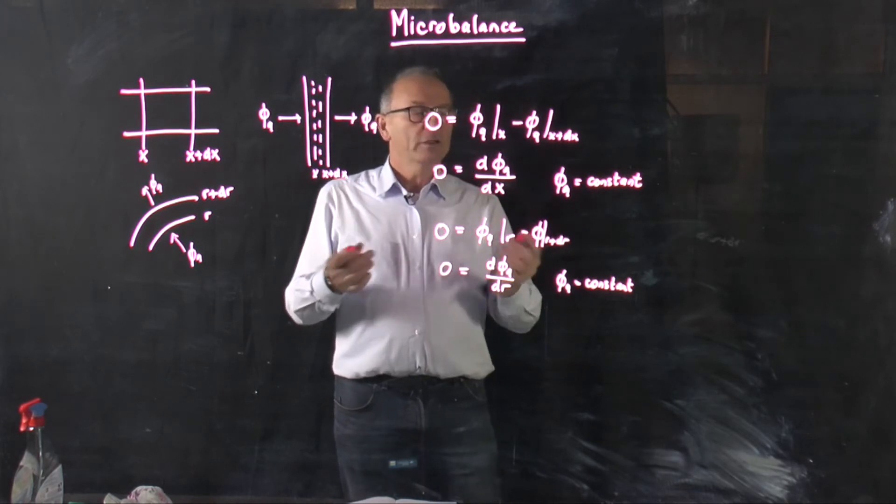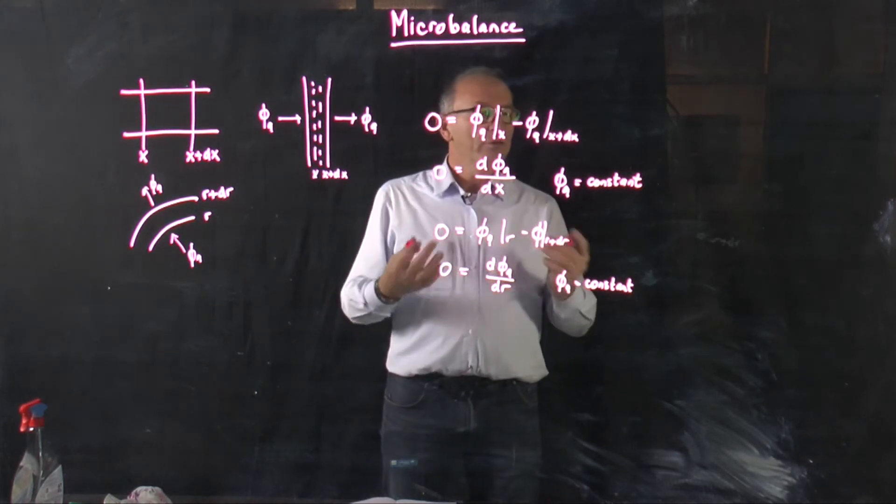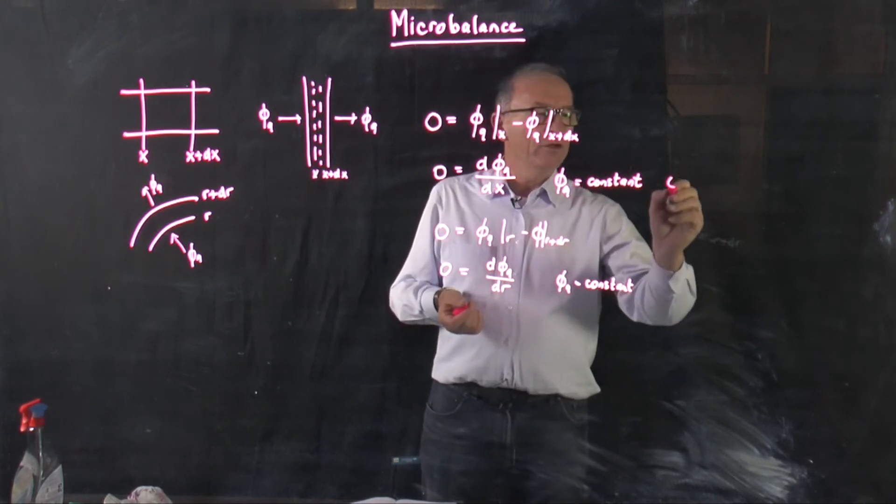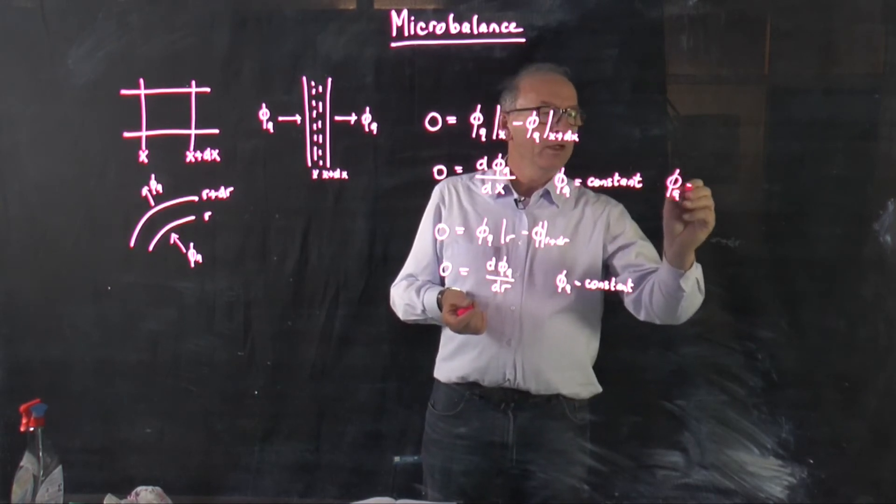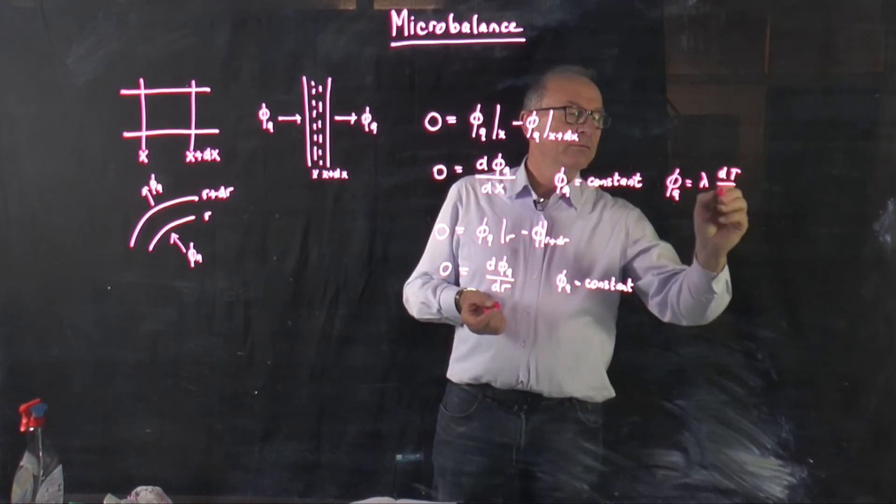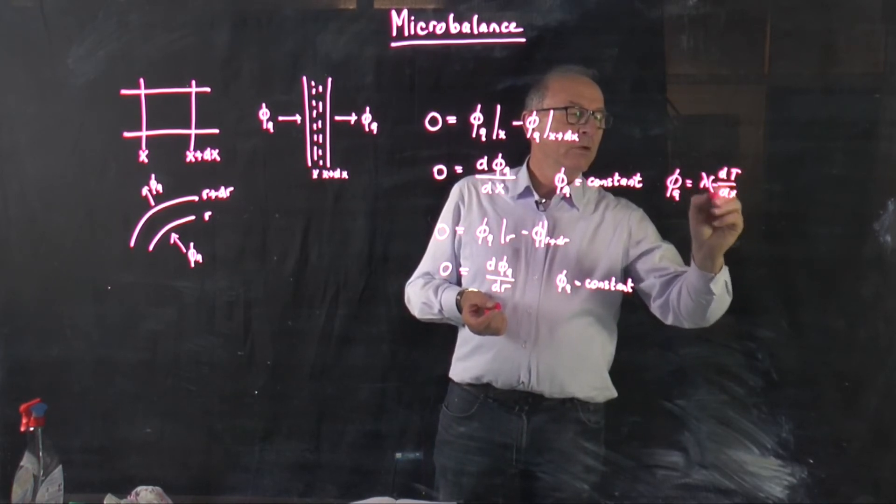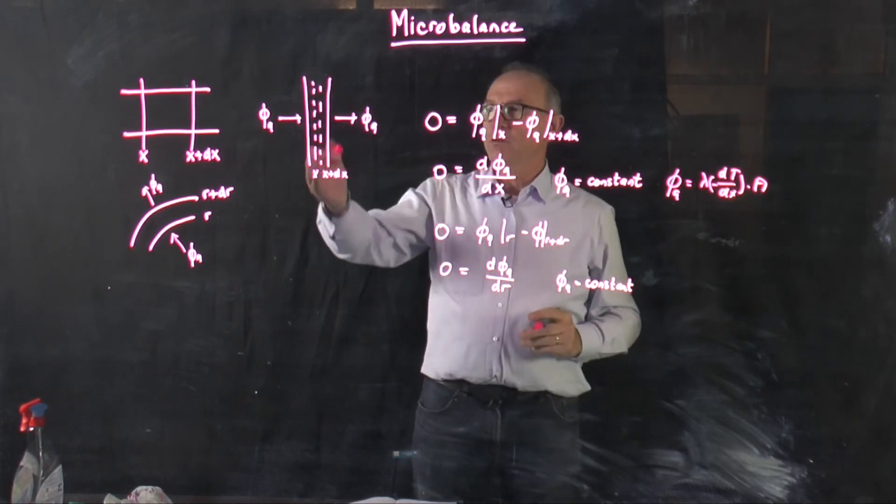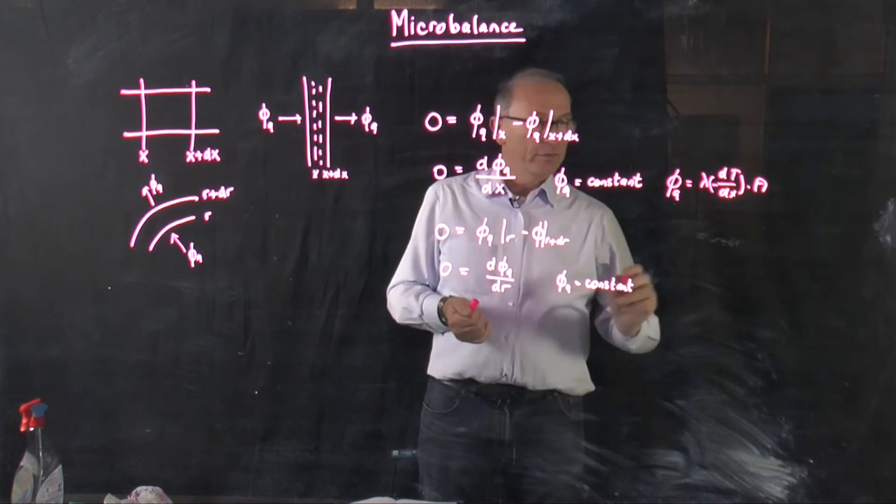You have to substitute in the case of heat conduction Fourier's law and if you would do that then you get the following: phi q is Fourier's law multiplied by the surface area between which the heat is transferred.